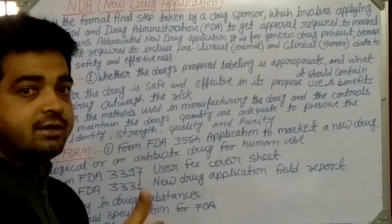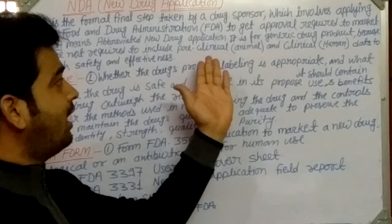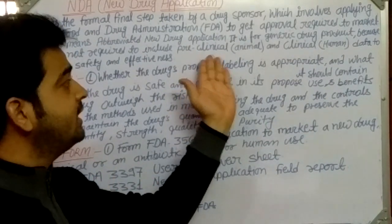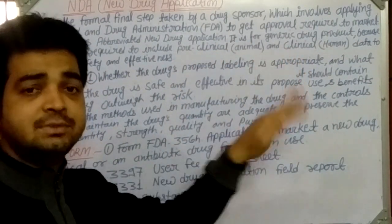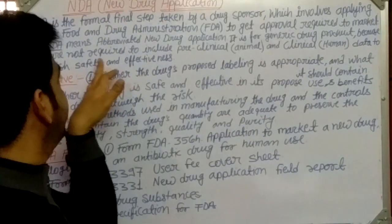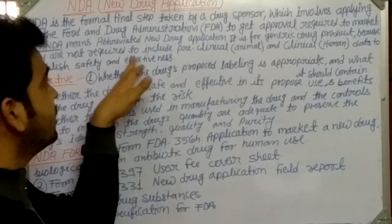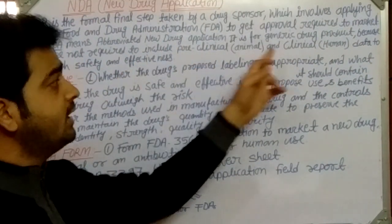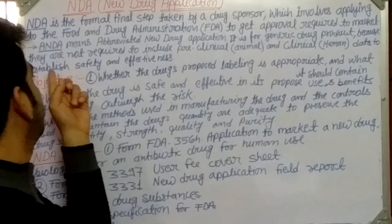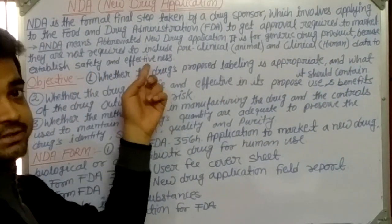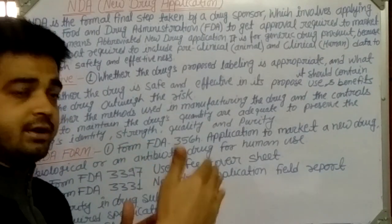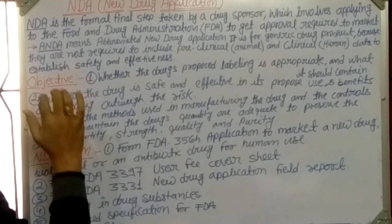For generic drugs under ANDA, the preclinical and clinical data has already been submitted to the FDA as part of the original drug's application. Therefore, the generic applicant is not required to include preclinical and clinical data again to establish safety and effectiveness, and can proceed directly to marketing of the drug.